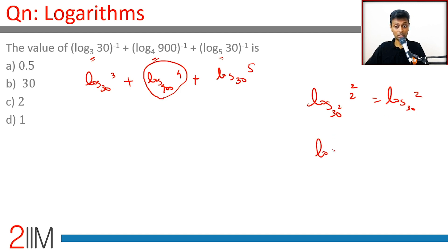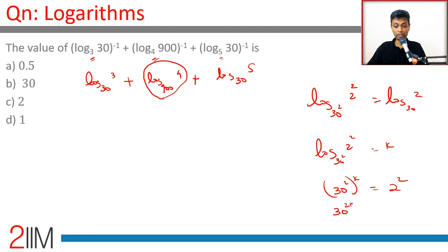Think about it — if log 2 squared to the base 30 squared were equal to k, then 30 squared to the power k would be 2 squared. So 30 to the power 2k would be 2 squared, meaning 30 to the power k would be 2, which means log 2 to the base 30 equals k.